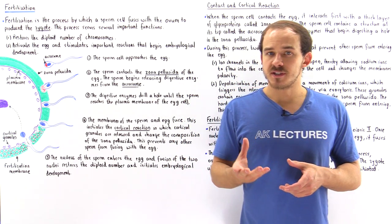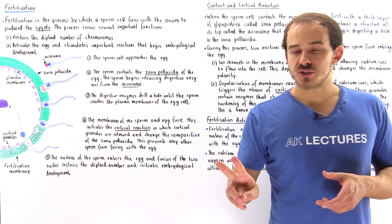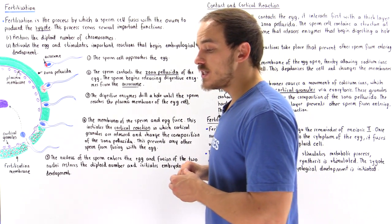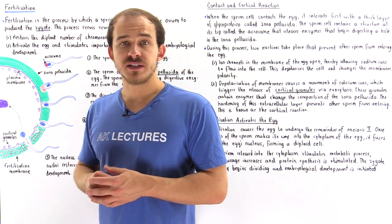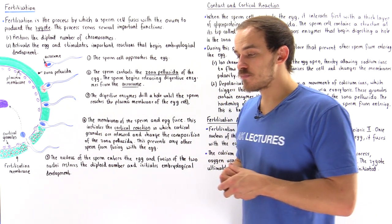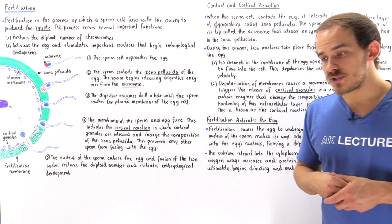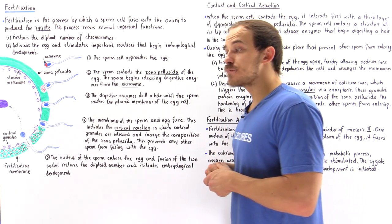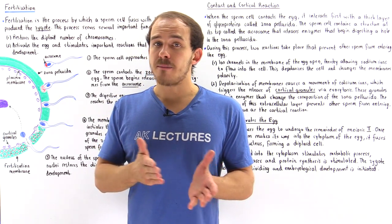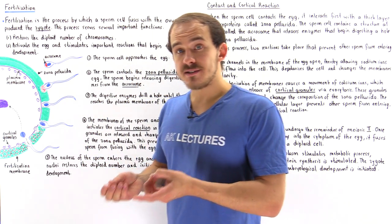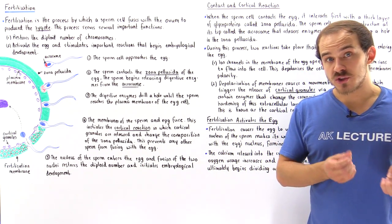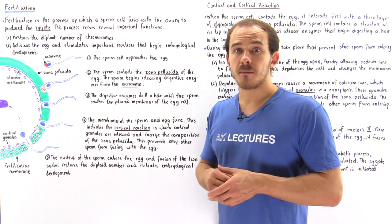The process of fertilization has two important functions. Firstly, it restores the diploid number of chromosomes of that particular organism. In the case of the human organism, we have 23 chromosomes found in the nucleus of the sperm cell, and this is a haploid number. Likewise, the egg from the female parent contains 23 chromosomes, a haploid number in the nucleus.